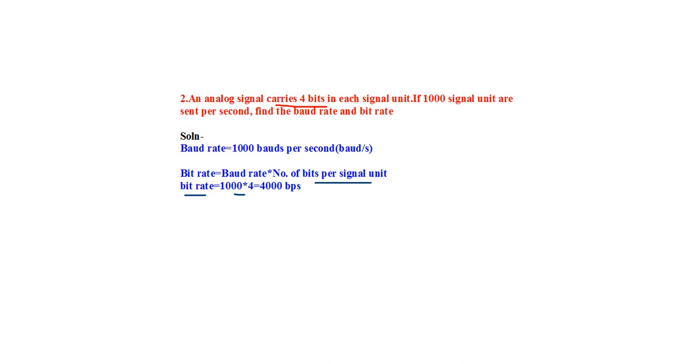So baud rate × number of bits per signal unit: 1000 × 4 = 4000 bps. The bit rate is equal to 4000 bps.